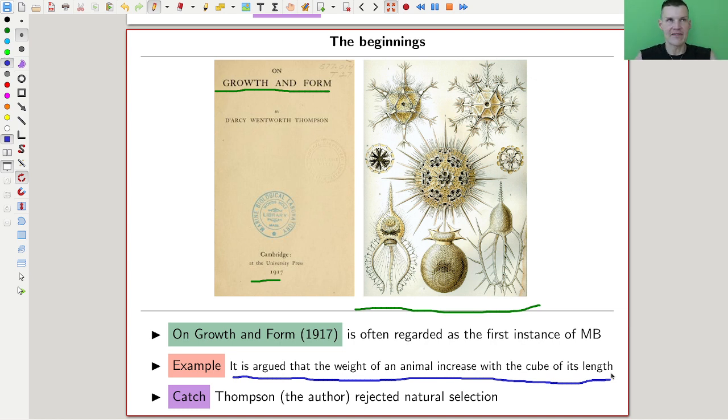The only real problem which I definitely should mention here with this book is that Thompson completely ignored, or rejected actually, natural selection, which is one of these key ideas in the history of sciences. Even in 1917, this was probably not yet established. So evolution is not covered in that book, but a lot of things are. It's the start of mathematical biology.